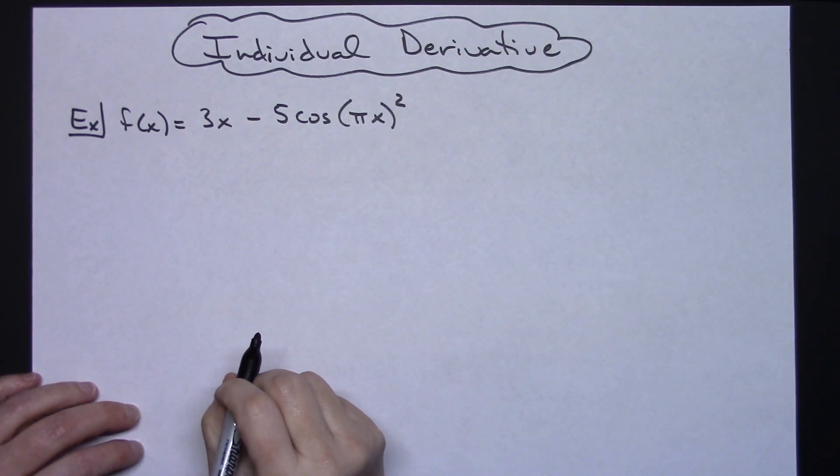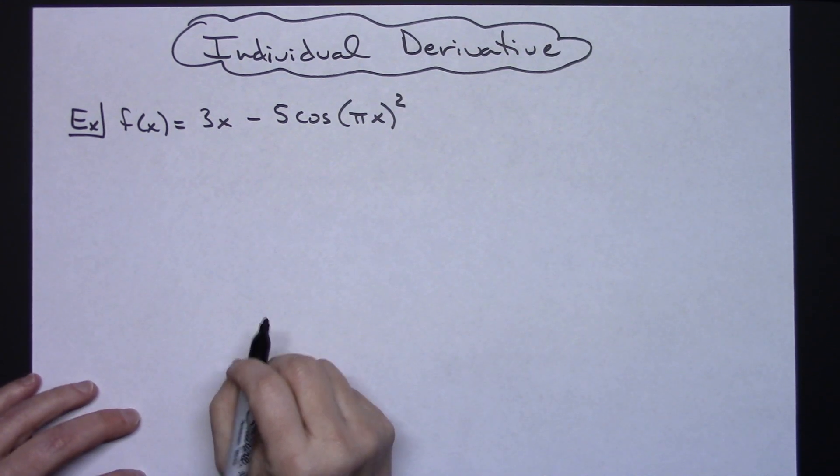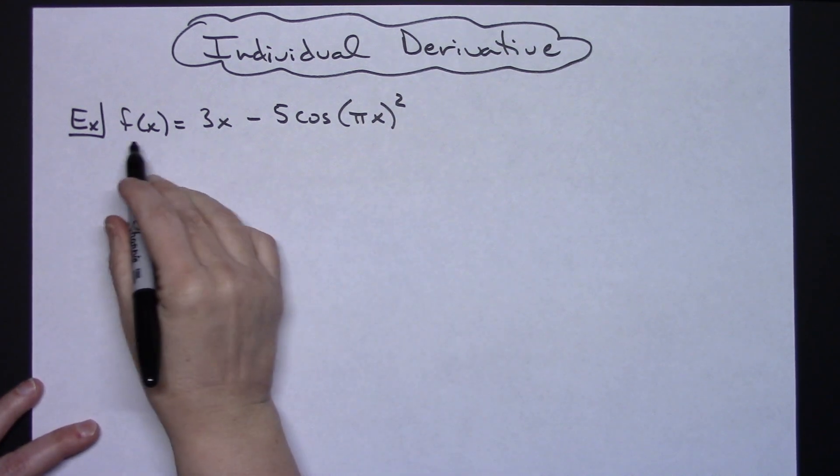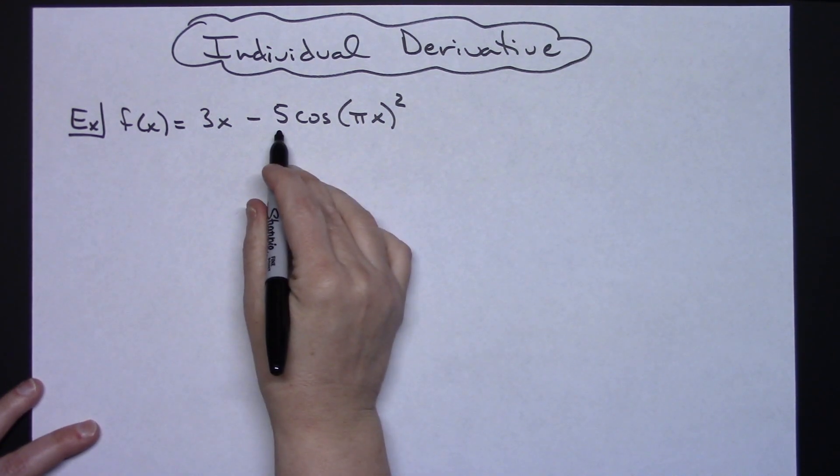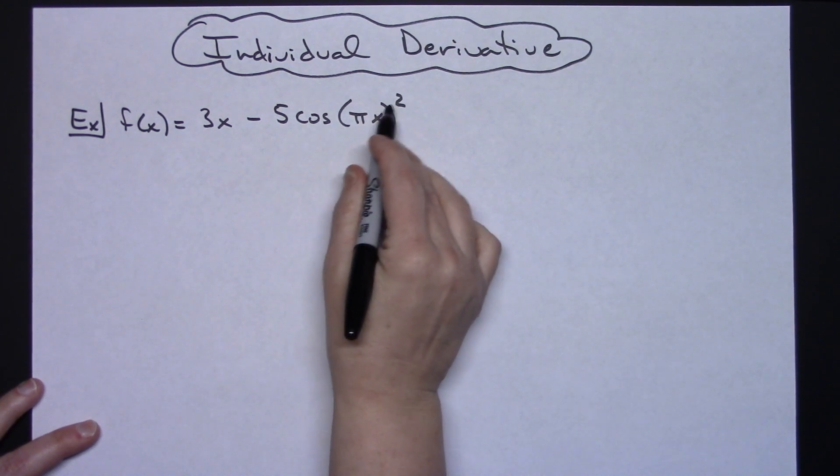In this video I'm going to work out an individual derivative problem. So we will start here with our function f of x equals 3x minus 5 cosine pi x squared.